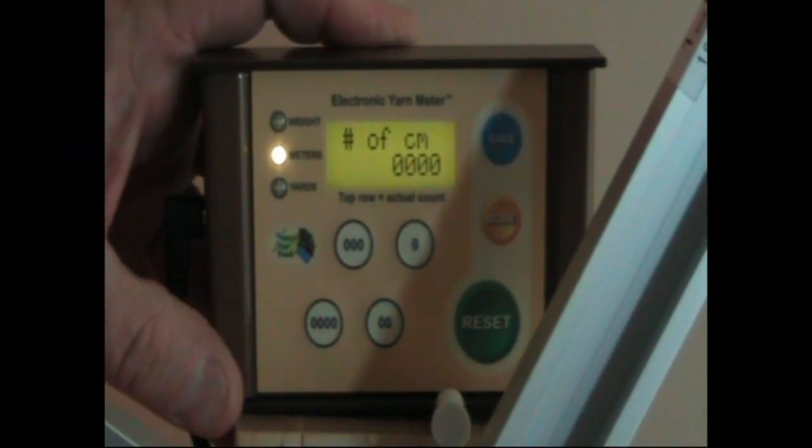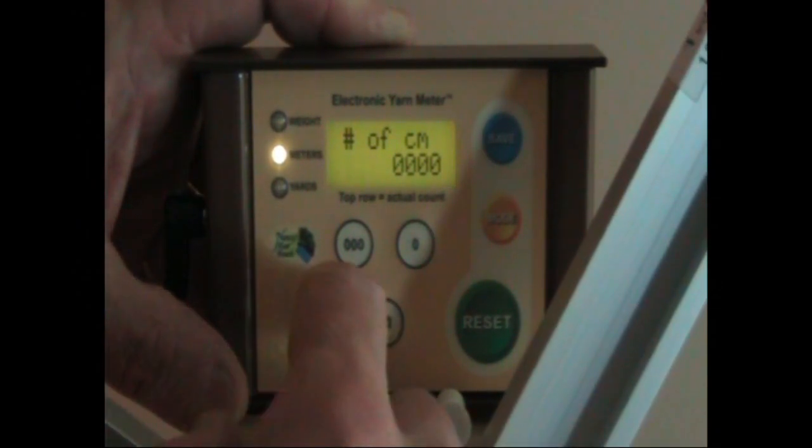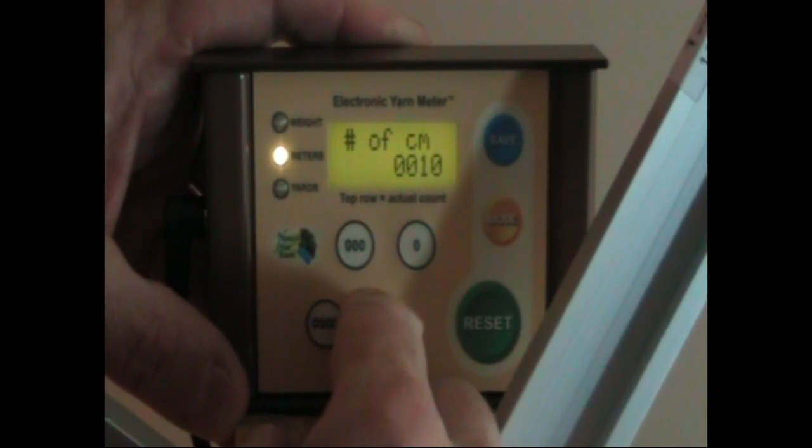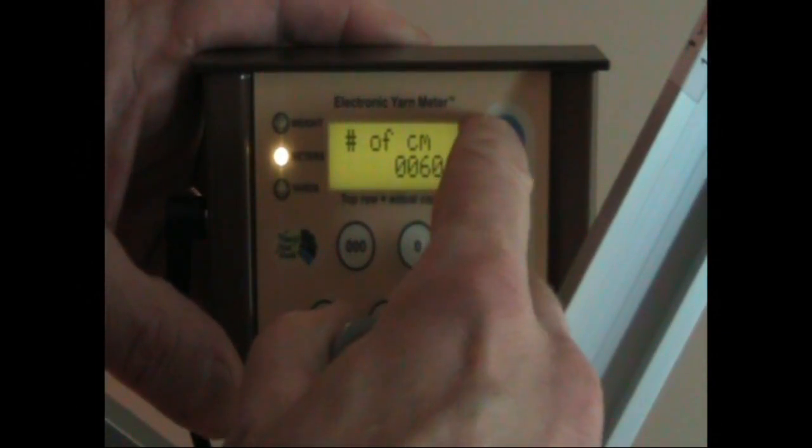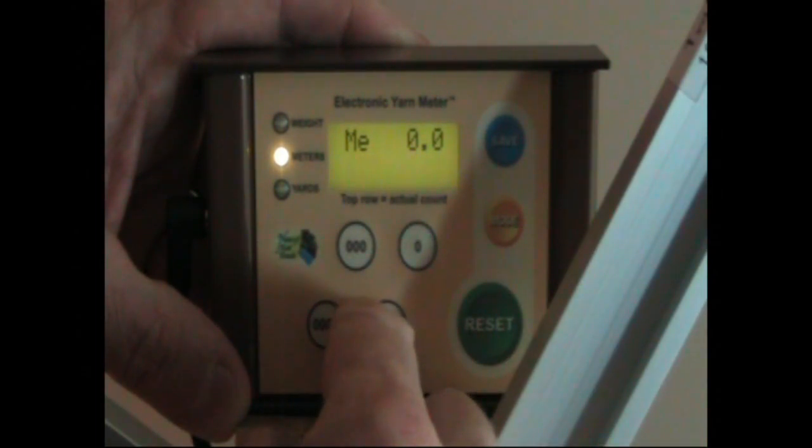In this mode we're going to enter centimeters. So we know that there's 100 centimeters in a meter. So why don't we enter a strange size. We'll call it 60 centimeters. And we'll enter a preset of 30 meters.